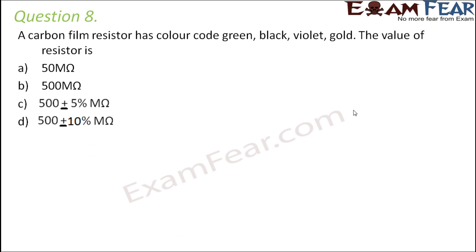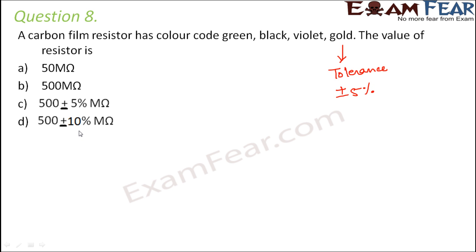Question number 8: A carbon film resistor has color code green, black, violet, and gold. The value of the resistor is? A simple approach: when gold appears at the end, it means a tolerance of ±5%. So just find which option has ±5% tolerance — that is option C. Therefore, C is the correct answer.